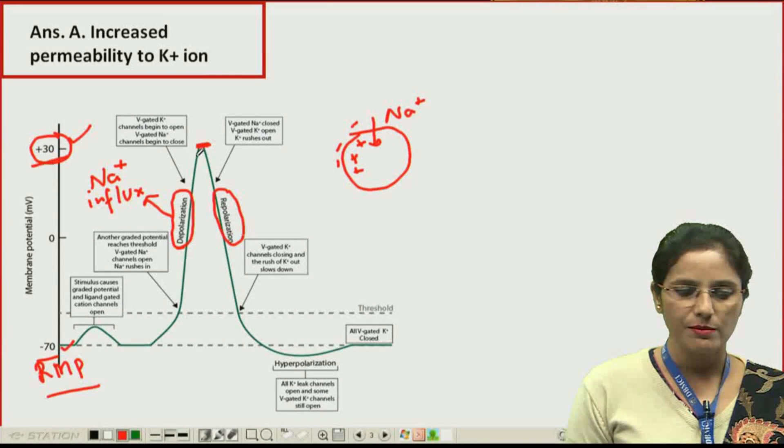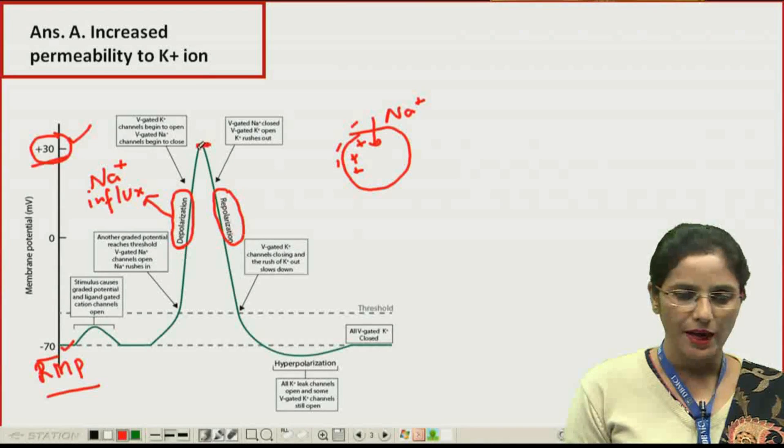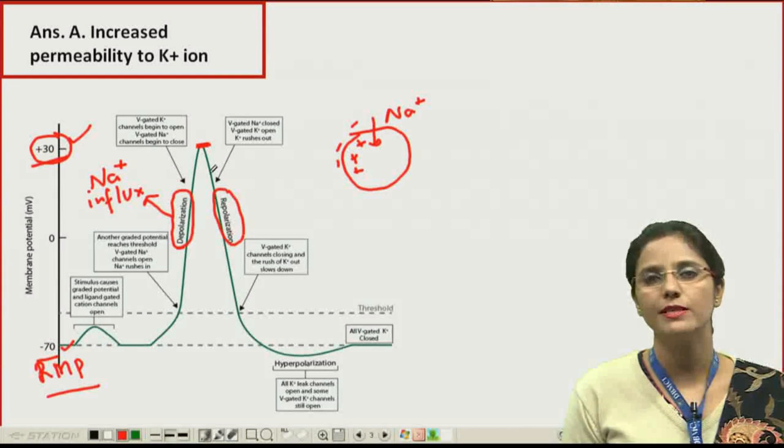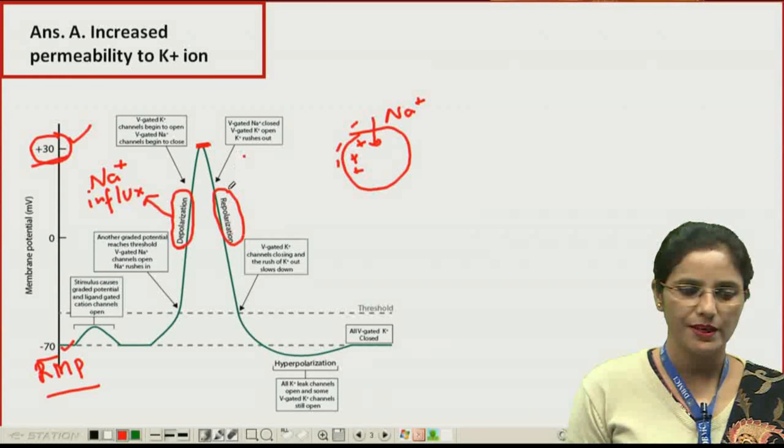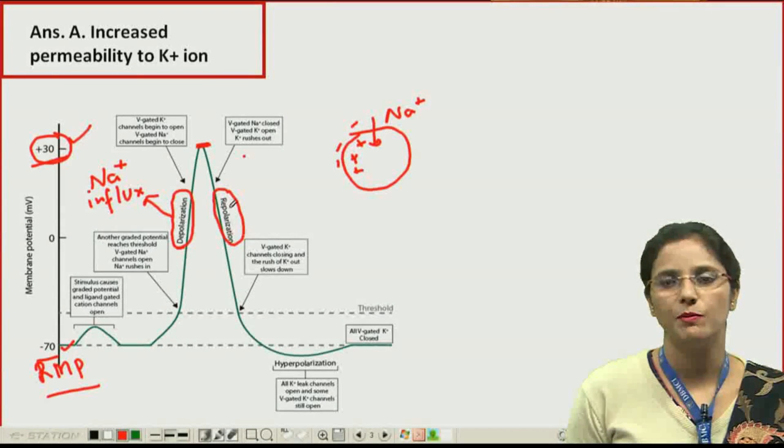At the peak, sodium starts closing and potassium starts opening. This increase in the permeability of potassium occurs in the repolarization phase, and the permeability of sodium is reduced in the repolarization phase.